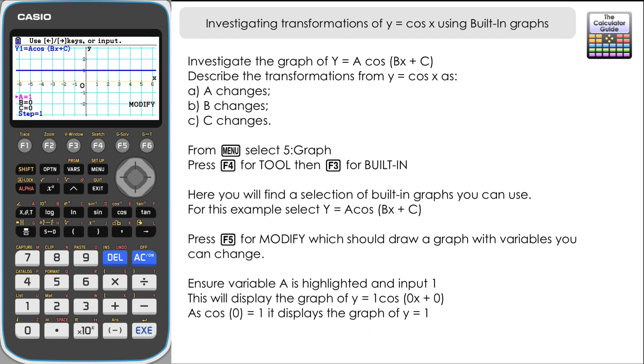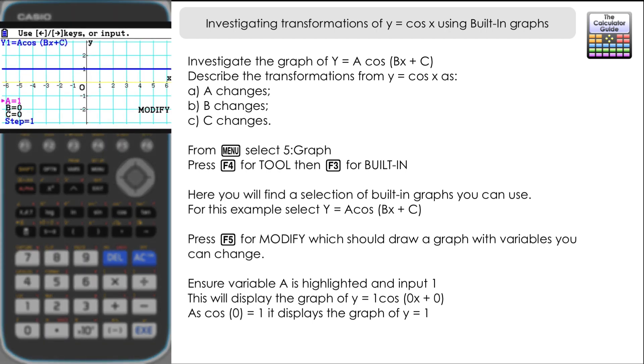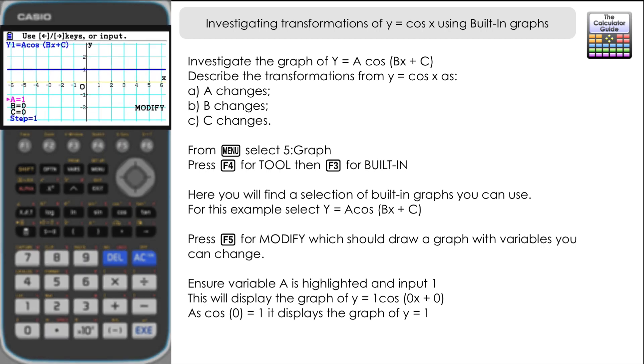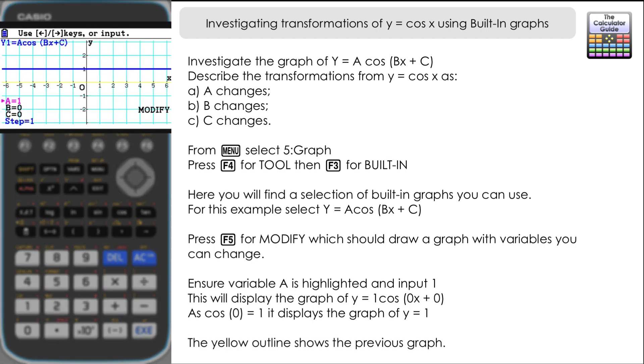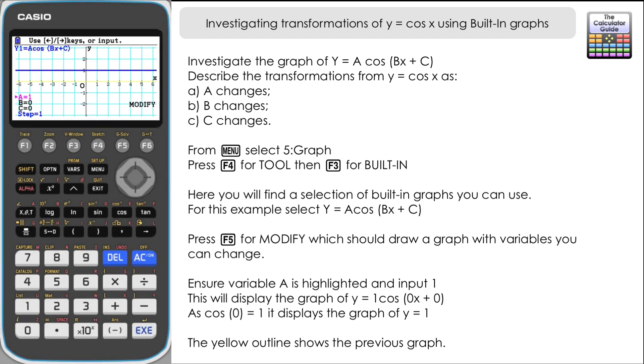It's altering the a value to one and you can see that the graph has changed to y equals one. Now at the moment the bit that's within the cosine function is still zero, both b and c are zero. So cosine zero is one, it's one times one. So y equals one and you can see that we're now displaying the graph of y equals one. Do note that there is a yellow outline there of where the graph was previously before we did this alteration.